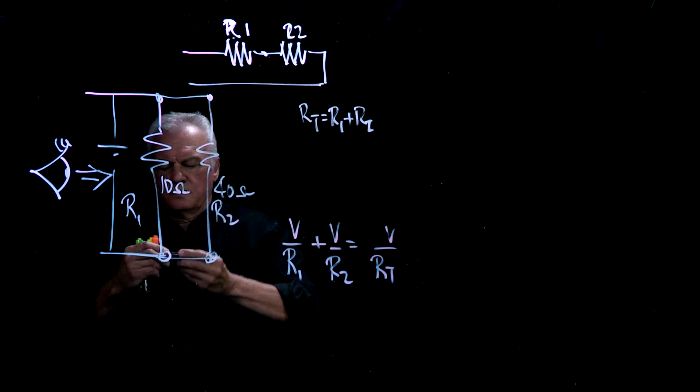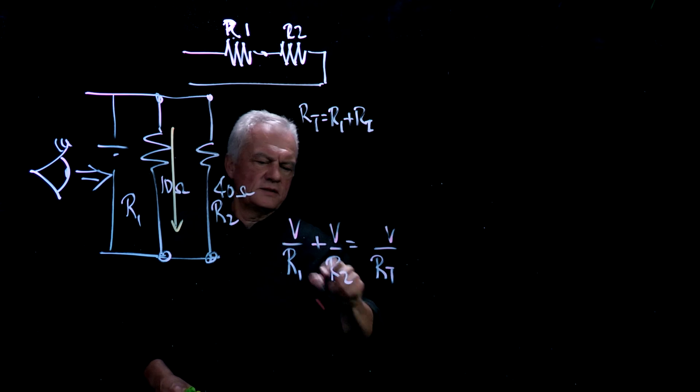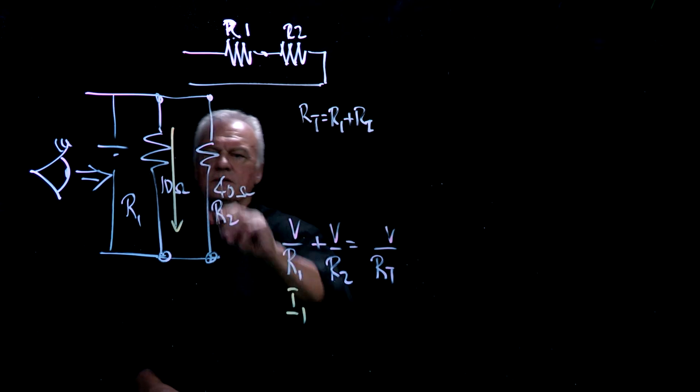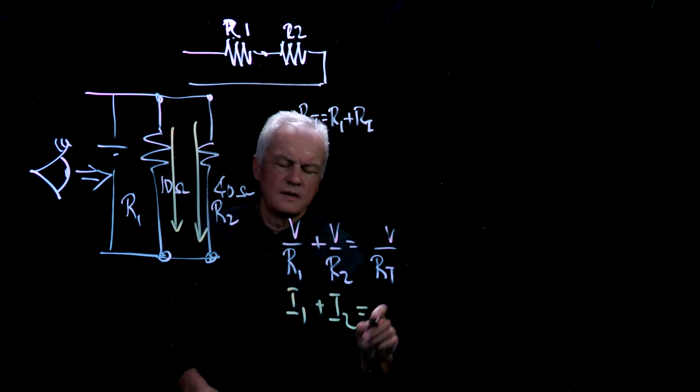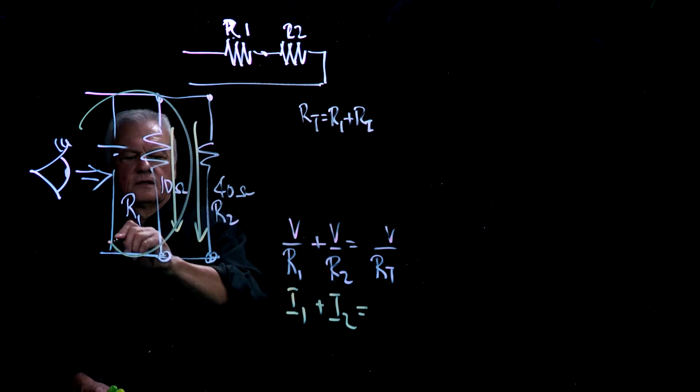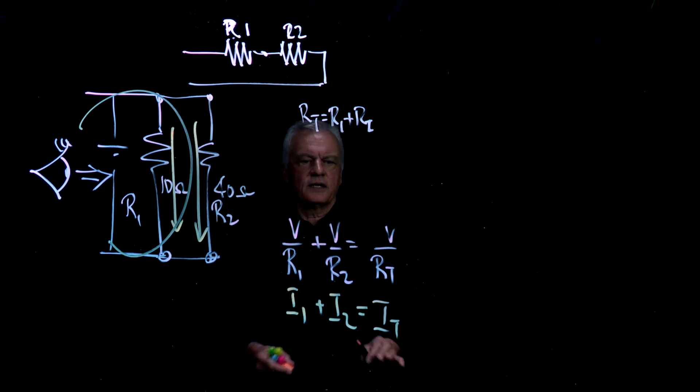The current through here plus the current through here is going to equal the total current. Ohm's law, I equals V over R.